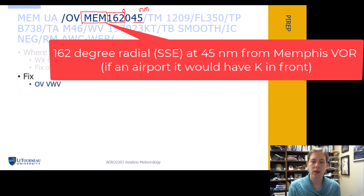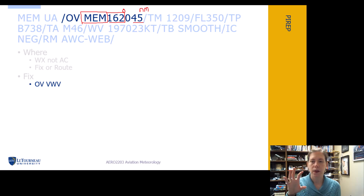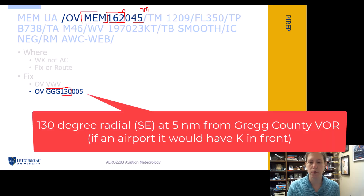We can report it if we're right over a fix. So say we encountered the weather conditions right over the VOR — then we would report it like this: VWV VOR. Or here we are on the 130 degree radial from the Grant County VOR at five nautical miles away.